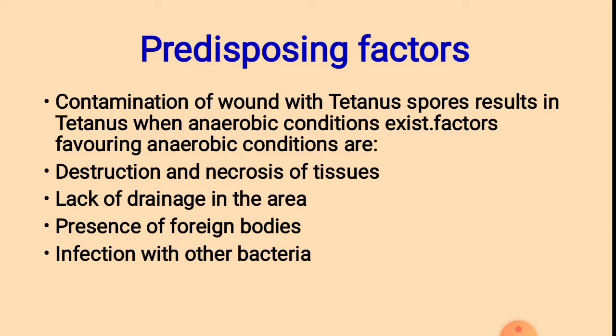Predisposing factors: Contamination of a wound with tetanus spores results in tetanus when anaerobic conditions exist. Factors favoring anaerobic conditions include destruction and necrosis of tissues, lack of drainage in the specific area, presence of foreign bodies, or infections with other bacteria.